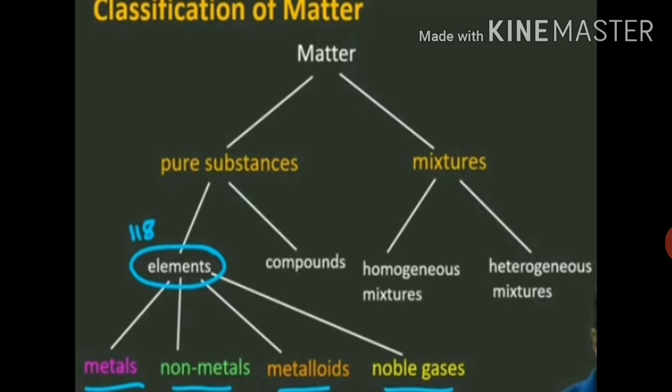Pure substances are again divided into elements and compounds. In this chapter, we have to focus on elements. An element is a substance which cannot be split up into two or more simpler substances by usual chemical methods like applying heat, light and electric energy. Iron, oxygen, magnesium, etc. are examples of elements.